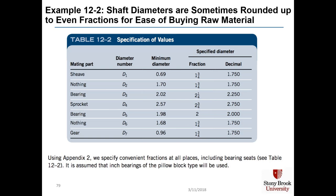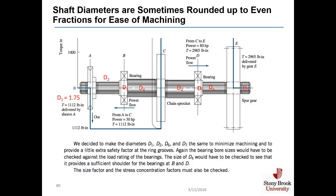Shaft diameters are sometimes rounded up to even fractions for ease of buying raw material. At a minimum, you need a shaft with a 2.57-inch diameter somewhere in it. If you round up to 2.75 inches, that's more likely what you can purchase as round stock and then machine down to 2.57. Shaft diameters are also rounded up for ease of machining; in this case we decided to make diameters D1, D2, D6, and D7 the same in order to minimize machining and provide a little extra safety factor at the ring grooves.